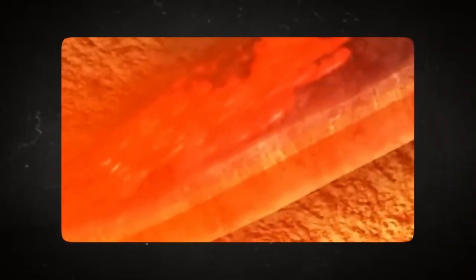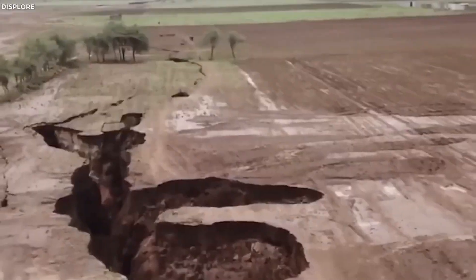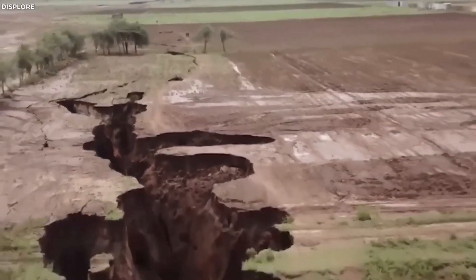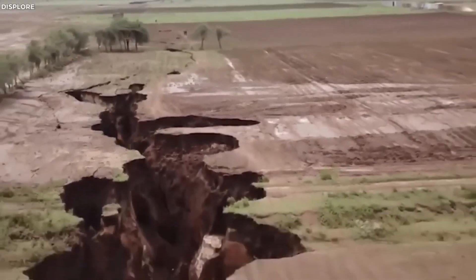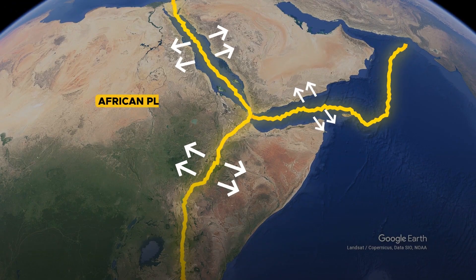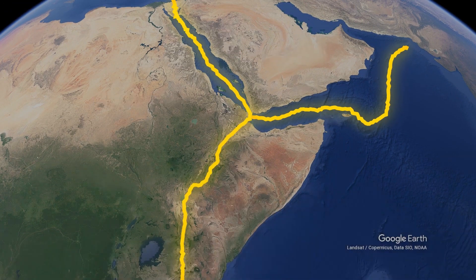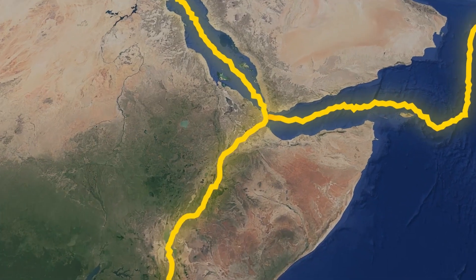As the crust continues to weaken, large sections will sink, allowing seawater to flood the depression and form a new ocean basin. This transition marks the evolutionary path from a continental rift to an oceanic rift, as seen in the histories of the Red Sea and the Atlantic Ocean.